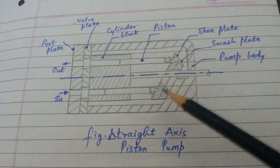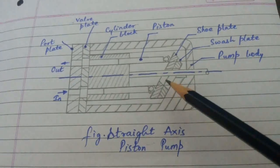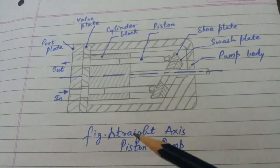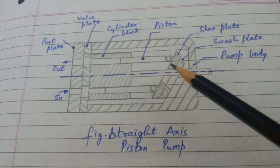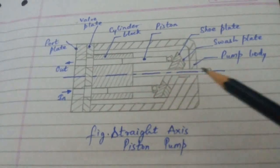The angle of the squash plate can be varied to change the discharge. When the shaft is rotated,